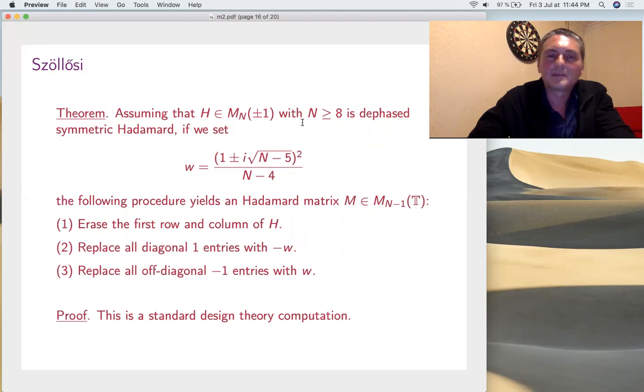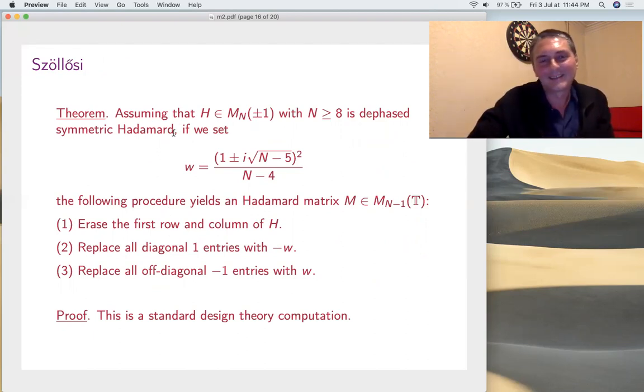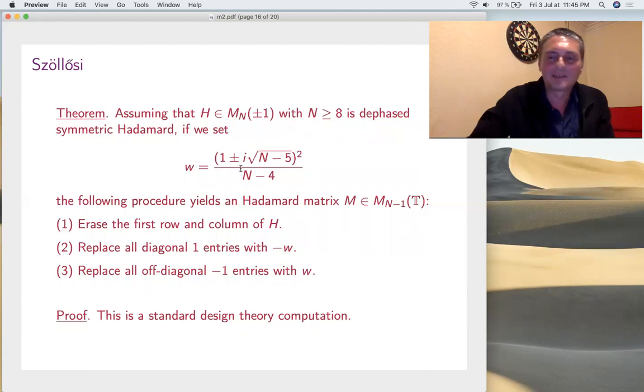Now, at n is 7, you have this interesting construction of Selesny. It's a design combinatorial construction. You take a dephased real Hadamard matrix symmetric and then you can do all these things here, erase all points wherever and you get another Hadamard matrix which has size n minus one. Let me give you an example right away.